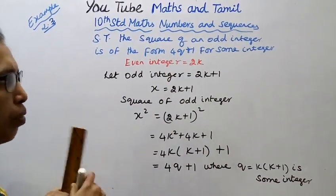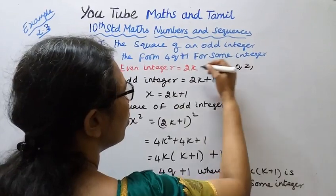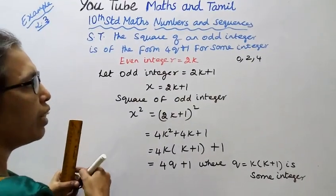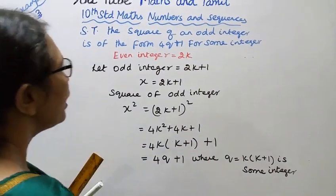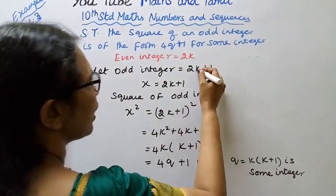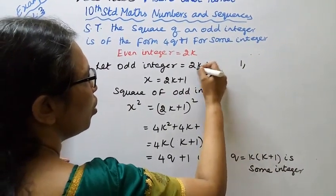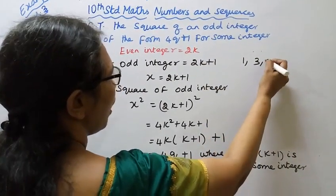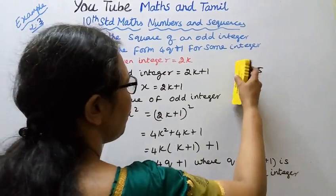So even integer is 2K. Odd integer is 2K plus 1. If K is 0, then 2 times 0 plus 1 equals 1. If K is 1, then 2 times 1 plus 1 equals 3. If K is 2, then 2 times 2 plus 1 equals 5. That is odd integer. Let odd integer be 2K plus 1.